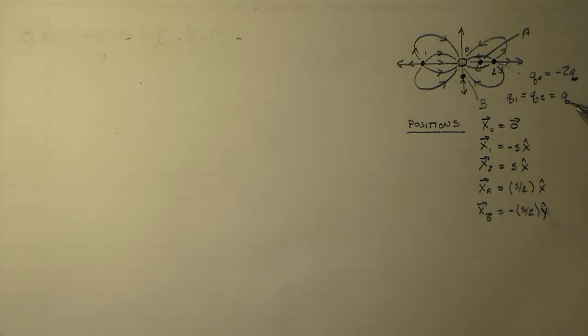So 1 and 2 we call Q, Q0 we call minus Q. And we worked out what the vector positions are of these from the origin.